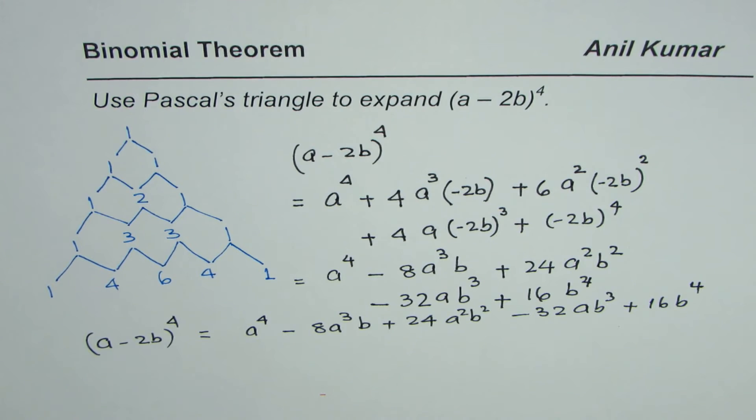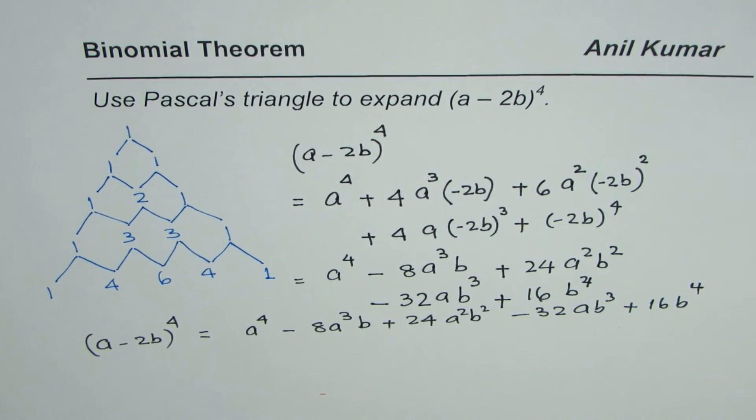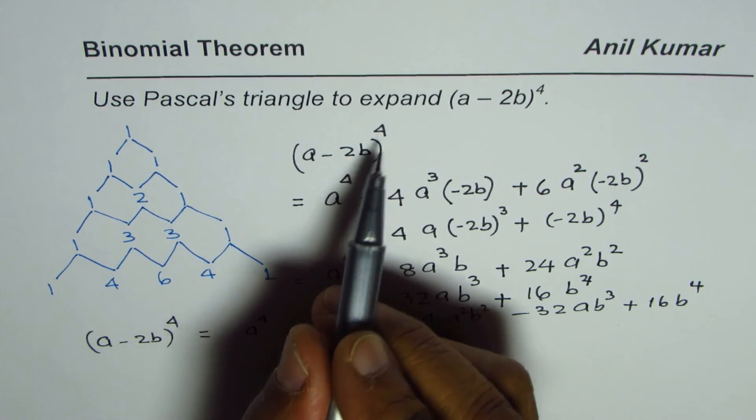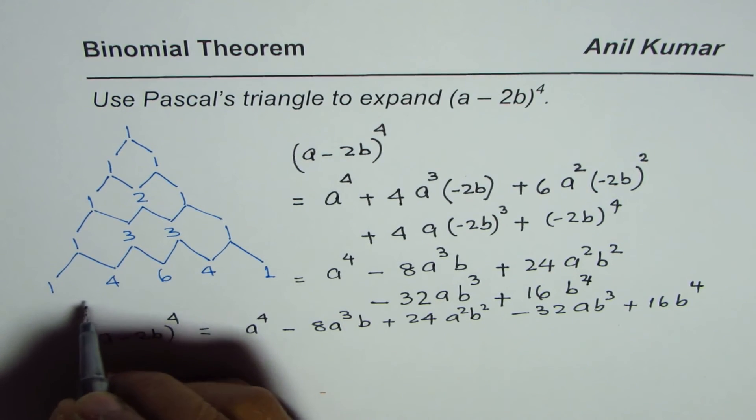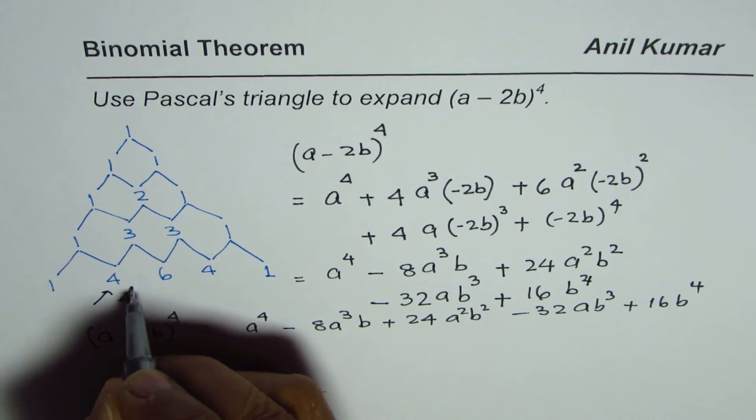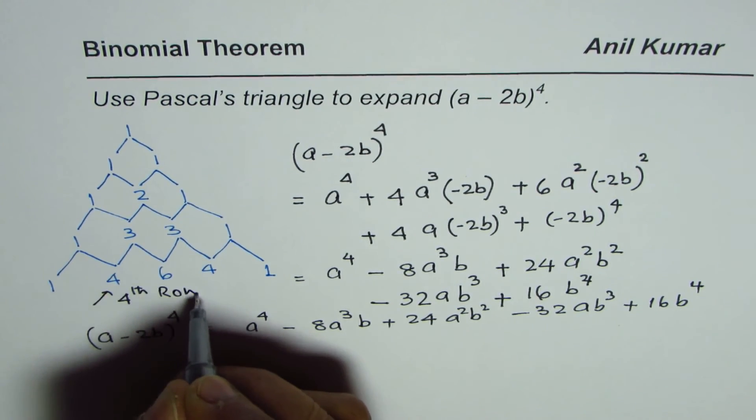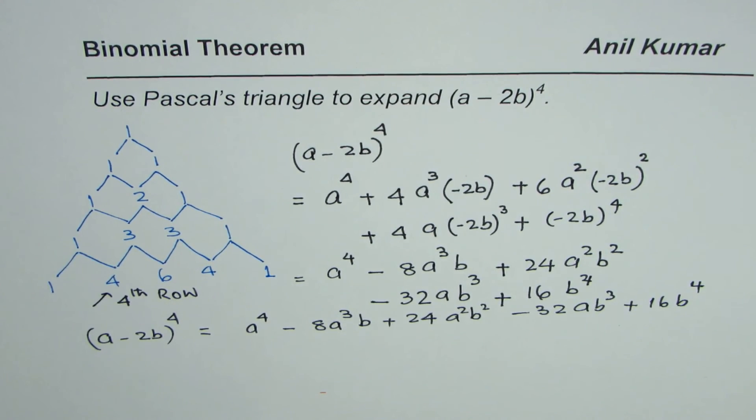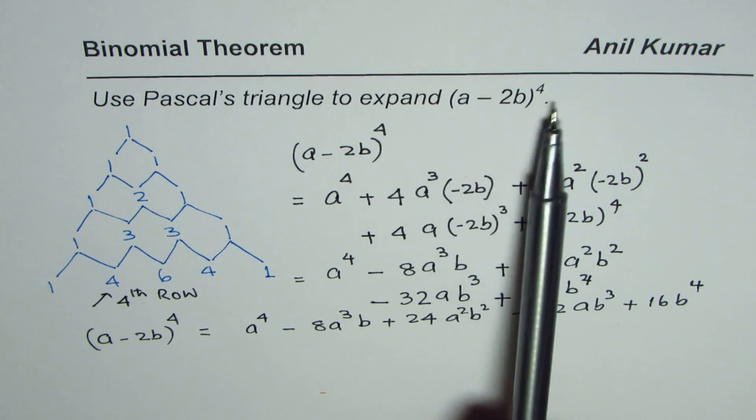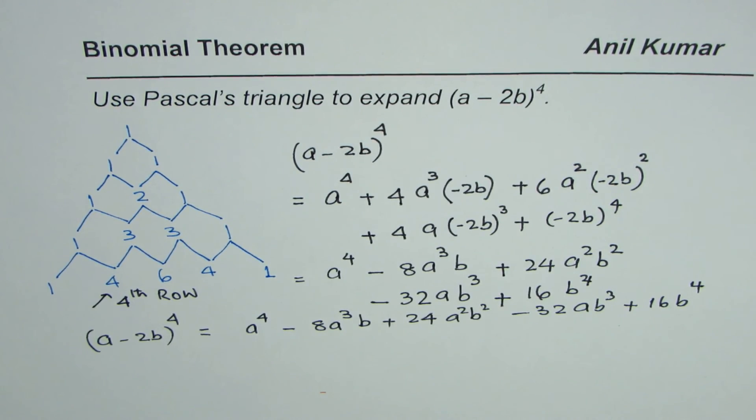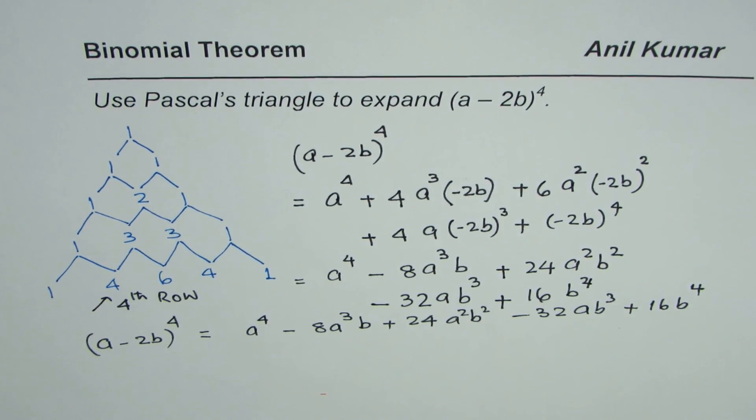That is how you can expand a binomial with the help of Pascal's triangle. Remember, for the fourth power, we look at the fourth row. We always start with row 0. The fourth row has five terms, so the expansion to the power of 4 has five terms, as given in our answer. I hope that helps. Thank you and all the best.